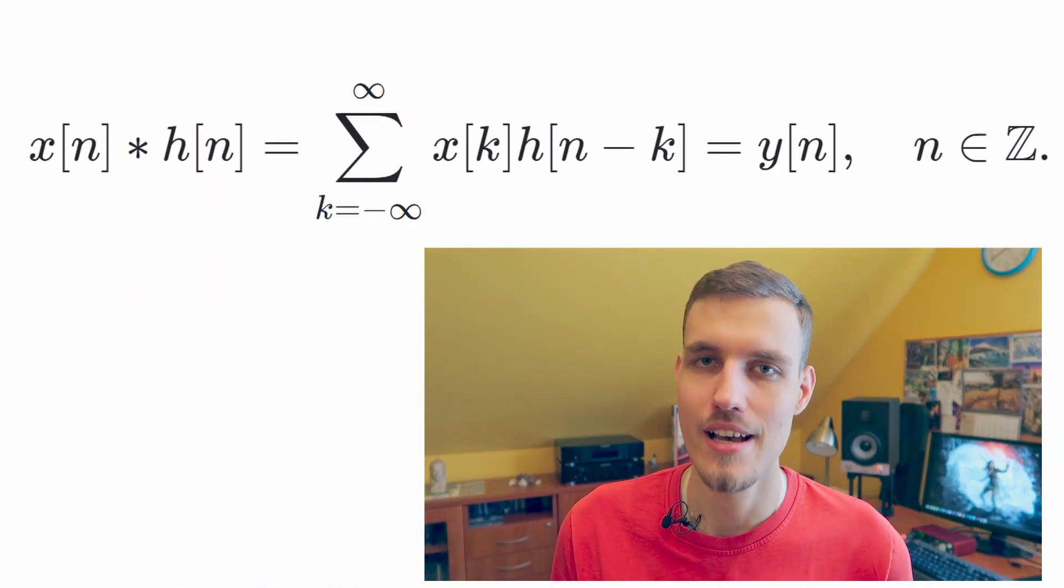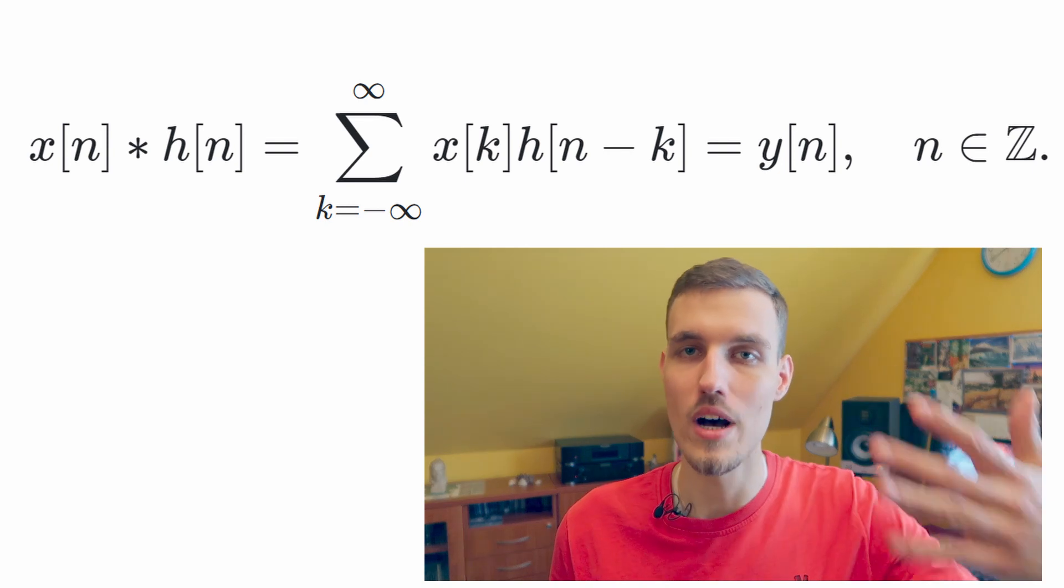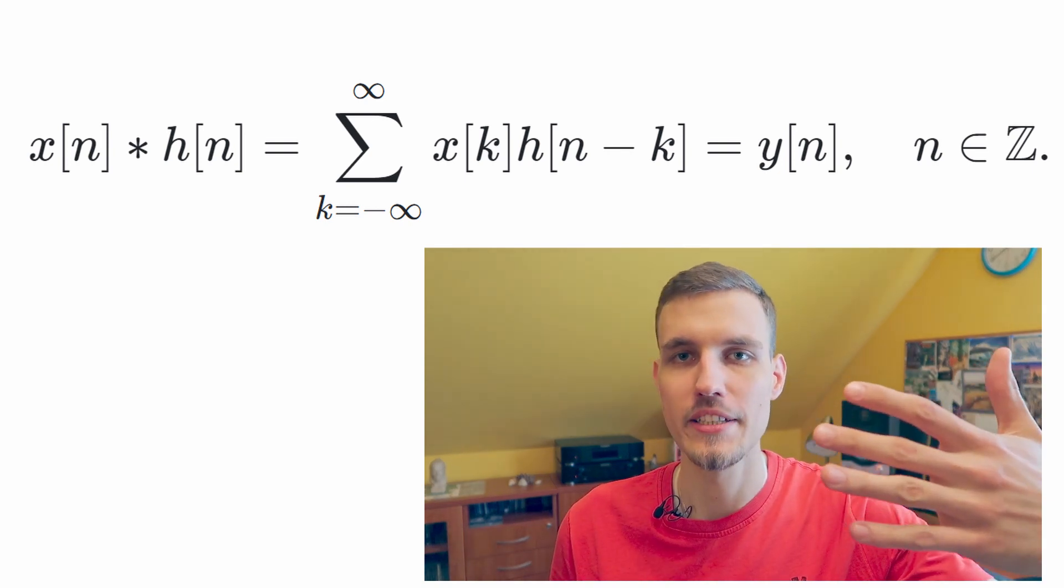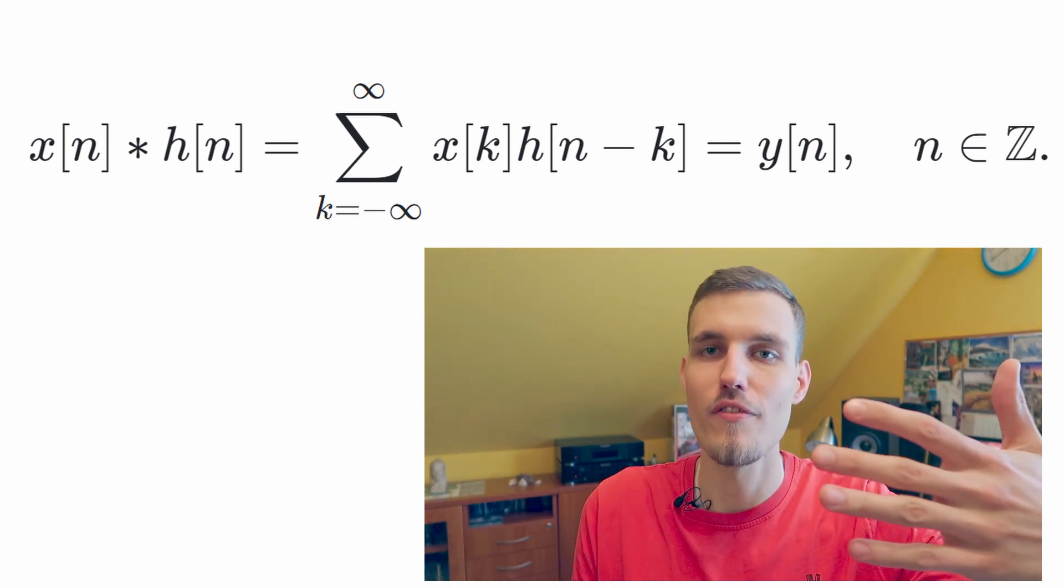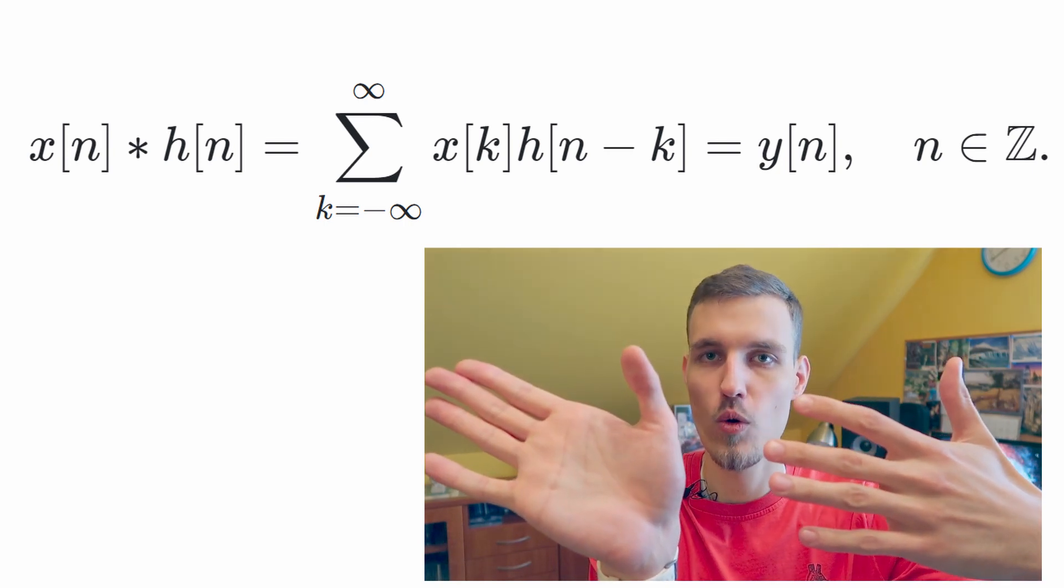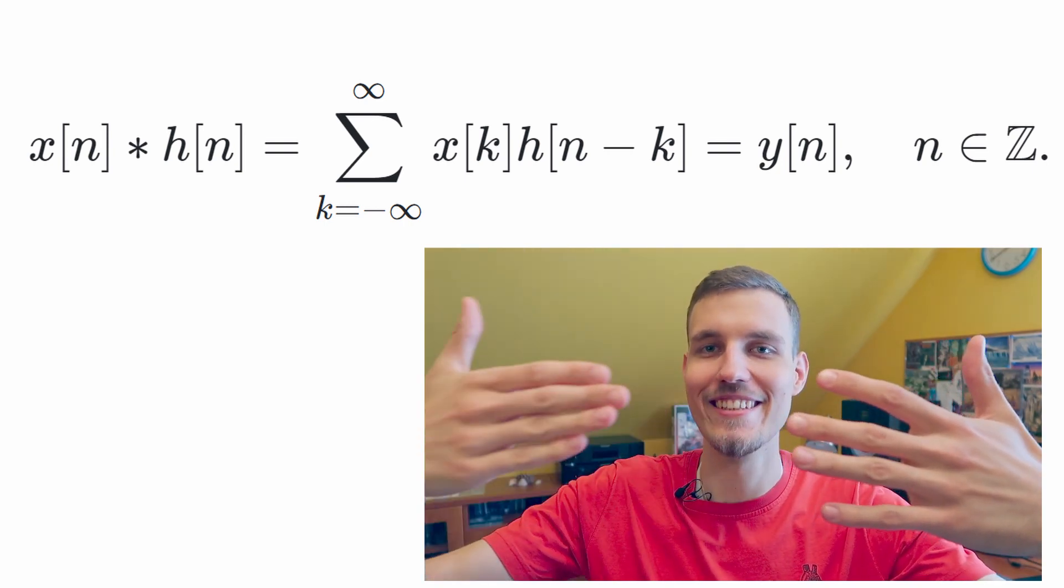Convolution can be seen as an infinite sum of samples of one signal multiplied with samples of another signal which is time reversed and delayed.